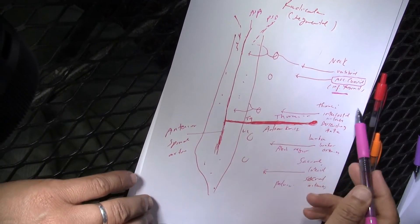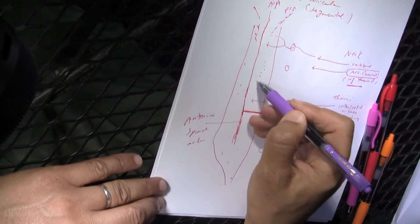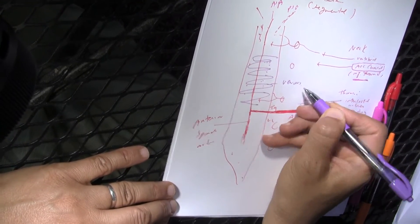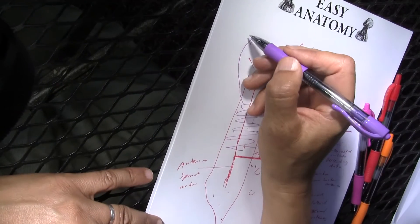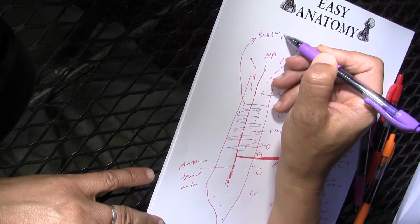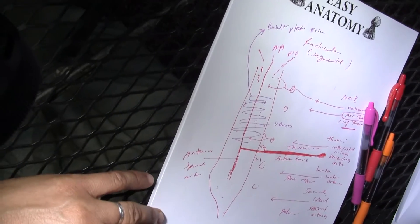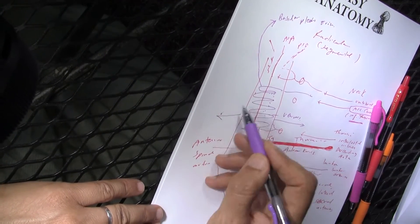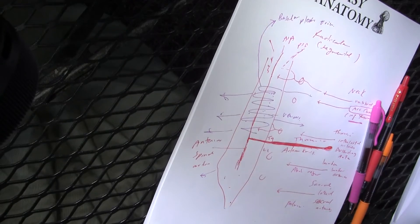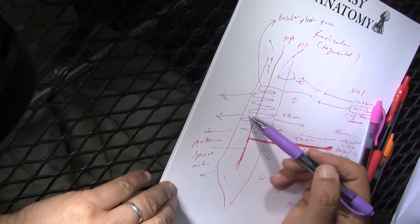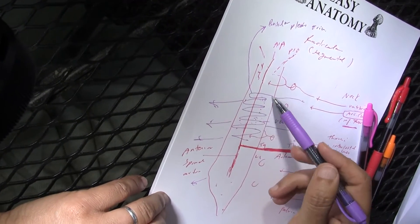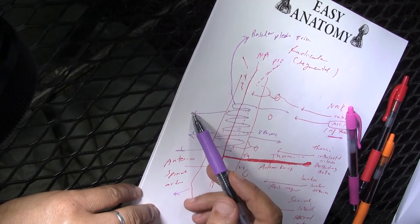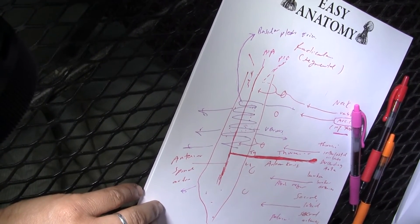The venous drainage corresponds to the arterial supply. The venous drainage of the spinal cord connects to the cranial cavity through the foramen magnum, where there is the basilar plexus of veins on the basilar part of the occipital bone inside the cranial cavity. It also communicates with segmental veins in the lumbar, pelvic, and thoracic regions, forming an extensive vertebral venous plexus inside the vertebral canal.